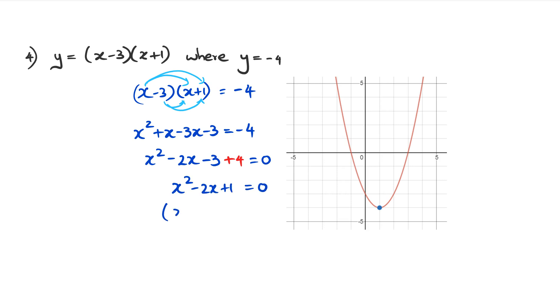Factorizing x squared minus two x plus one equals zero gives (x - 1)(x - 1) equals zero, so x equals positive one. And as you can see on the graph, there it is at x equals one.